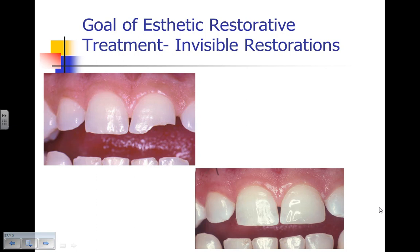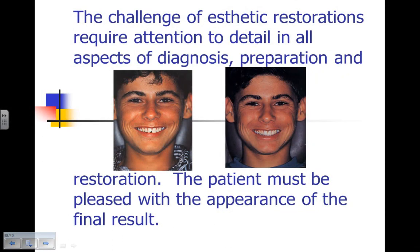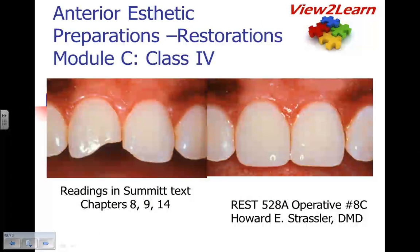The goal of aesthetic treatment when restoring Class 4s — any aesthetic restoration — is an invisible restoration that only the dentist and patient know about. The challenge of aesthetic restorations in the aesthetic zone requires attention to detail in all aspects from diagnosis to preparation and restoration. The patient must be pleased with the final result, and you should communicate limitations during the treatment plan. For the adolescent who fractured central incisor number 8 at the mesial incisal, the restoration was invisible to all who saw it — all they saw was a good looking smile. You've been listening to and watching Anterior Aesthetic Preparations and Restorations, Module C, the Class 4.